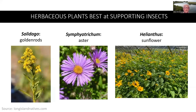There are rankings also for herbaceous plants best at supporting insects. The number one ranking plants are goldenrods, asters, and sunflowers.